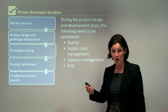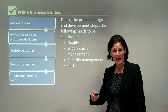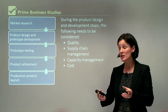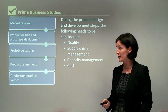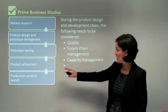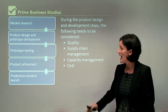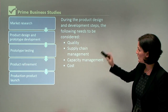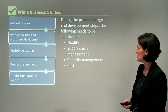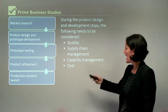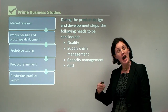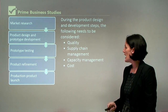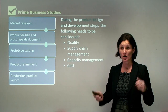We then test our prototype. Particularly with things that have mechanical devices like vacuum cleaners, dishwashers, and cars, we actually need to test the prototype to make sure it works effectively. We then refine our product and launch it to consumers. At all phases we need to be aware of the highest quality possible, our supply chain management, how much resources are costing us and how we can reduce cost, capacity management — how many we can make — and the overall cost of the entire operations process.